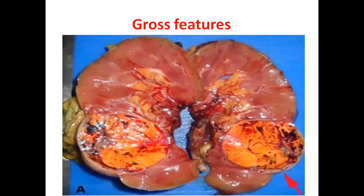Discussing gross features, whenever you are working on the surgical bench and a nephrectomy has been performed because of a malignant tumor or suspicion of malignant tumor, always try to see whether the tumor involves the capsule or Gerota's fascia, because this will completely change the staging of the tumor.